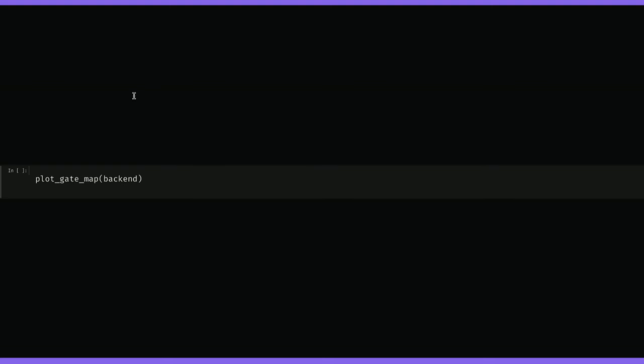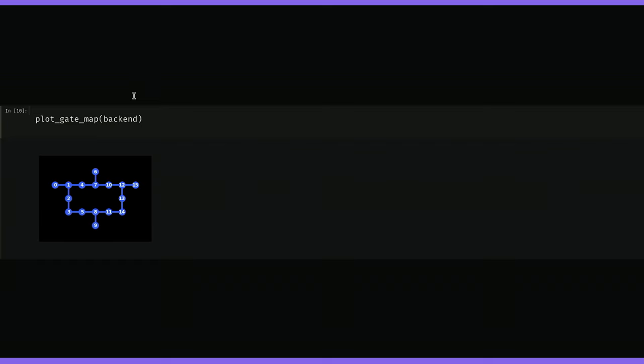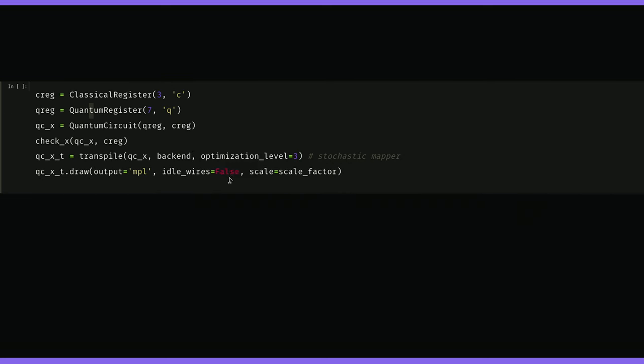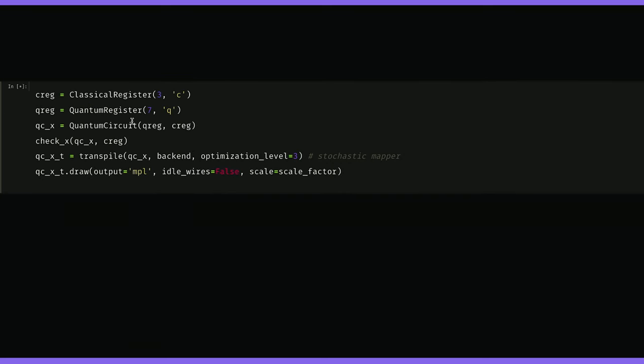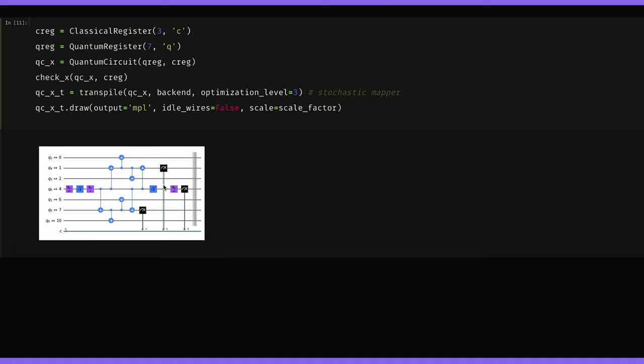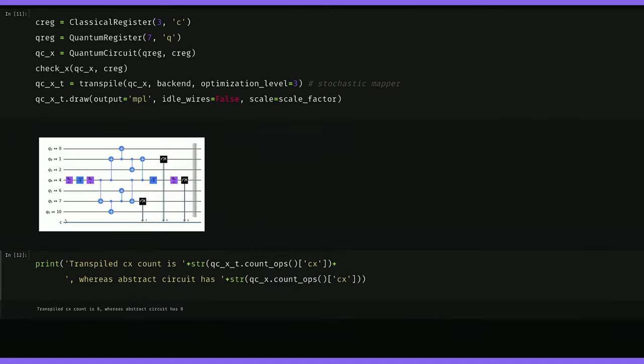So on IBM Guadalupe, the qubits are numbered like this. Let's use the transpiler to figure out an initial mapping for us and see if it works for the rest of the circuit. We'll look at the X check first. By running the check_x circuit through the transpiler at optimization level three, we can see that we didn't incur any extra CNOTs because the transpiler did a good job, and we can confirm that those numbers of CNOTs stayed at eight by printing out the number of CNOTs in both the abstract and the transpiled circuit.